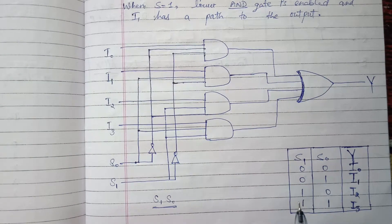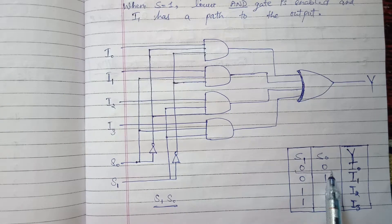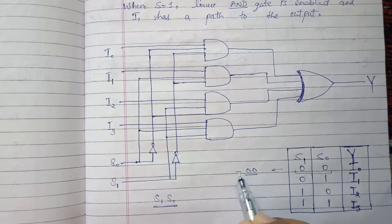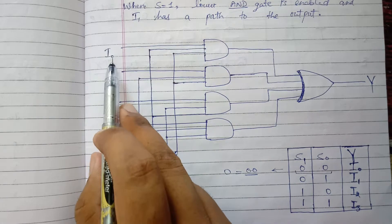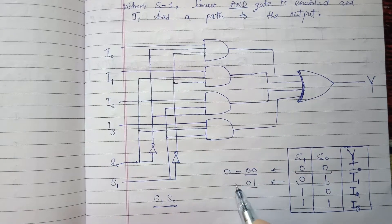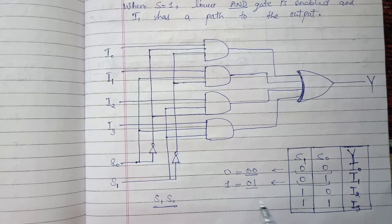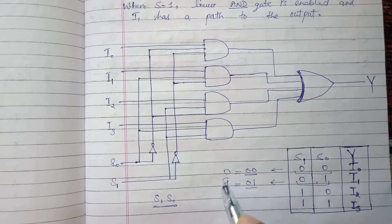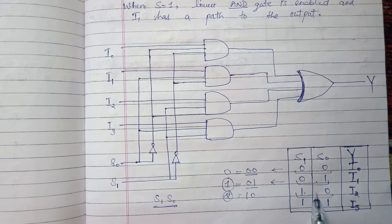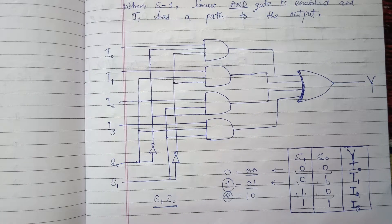The four bit combinations of the two select inputs are: 00, 01, 10, 11. For bit combination 00, the decimal equivalent is 0, so I0 is the output. For 01, decimal equivalent is 1, so I1 is the output. Bit combination 10 is minterm 2, so I2 is the output. We treat these bit combinations as minterms, and the corresponding input with the same subscript will be the output.